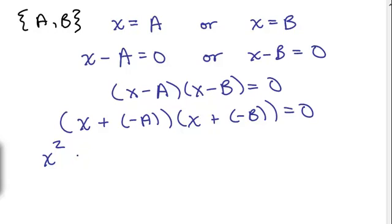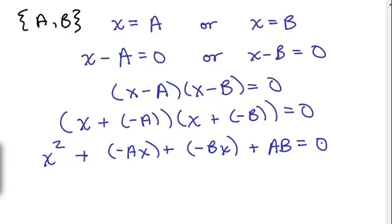And then I have plus a negative AX plus a negative BX plus negative A times negative B is AB equals 0.